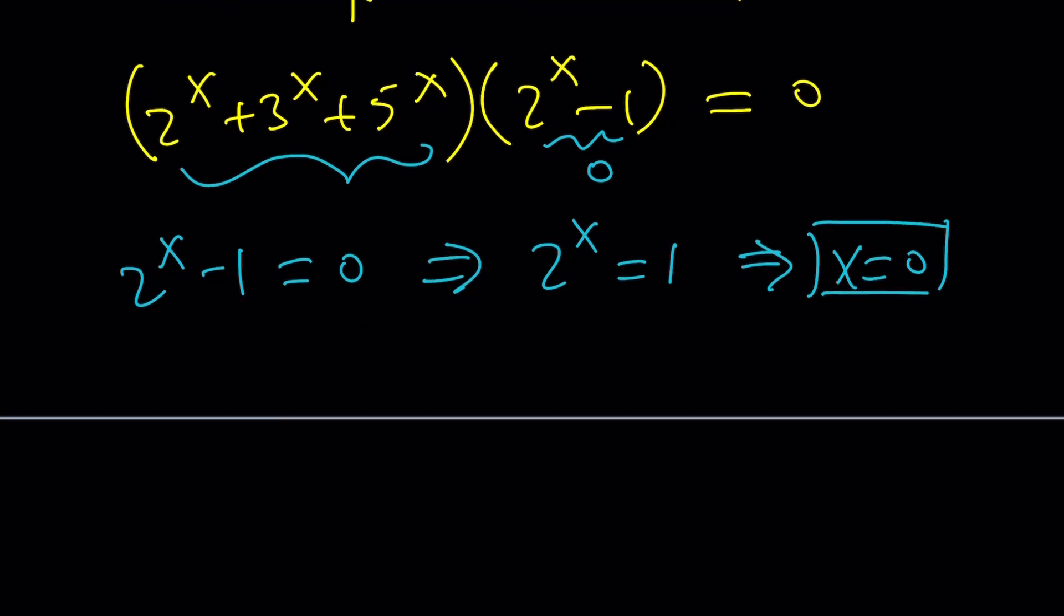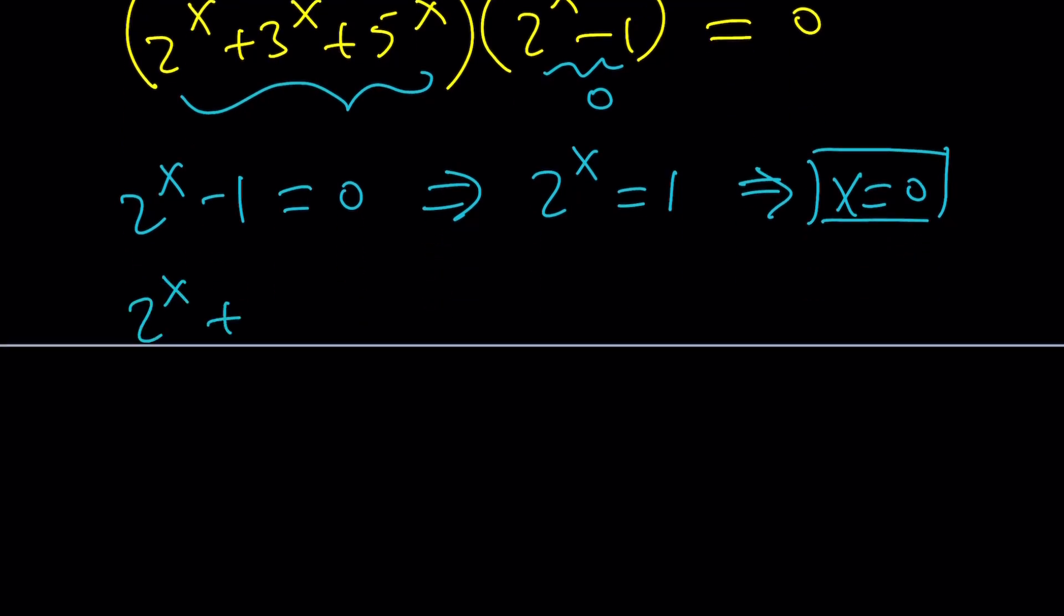Well, let's go ahead and take a look at the other factor now. 2 to the x plus 3 to the x plus 5 to the x equals 0. So, 2 to the x, 3 to the x, 5 to the x are all greater than 0. I'm not saying greater than or equal to because they can't even be 0. They're all positive. Sum is positive. That can't be 0. So, even in the complex world, maybe in the complex world, there is a solution. But how do you find it? That's a very good question, right?